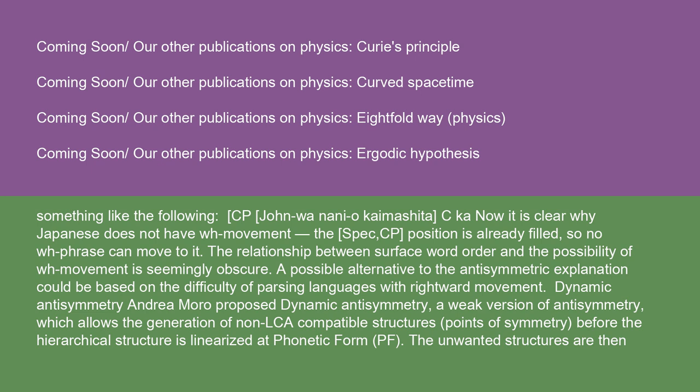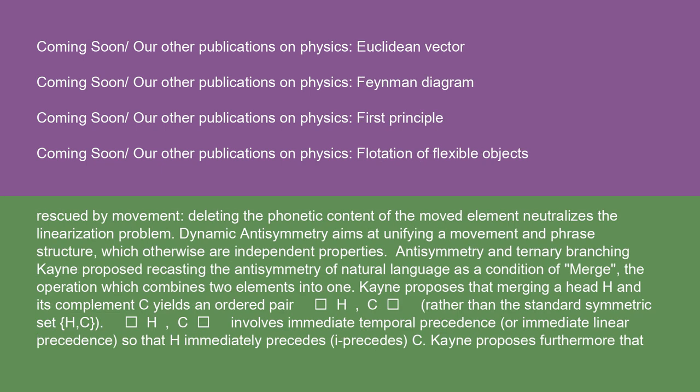Dynamic antisymmetry: Andrea Morrow proposed dynamic antisymmetry, a weak version of antisymmetry, which allows the generation of non-LCA compatible structures — points of symmetry — before the hierarchical structure is linearized at phonetic form (PF). The unwanted structures are then rescued by movement. Deleting the phonetic content of the moved element neutralizes the linearization problem. Dynamic antisymmetry aims at unifying movement and phrase structure, which otherwise are independent properties.